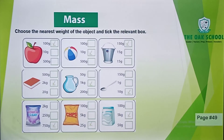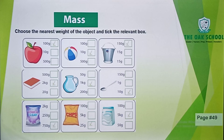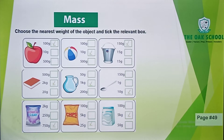Students, we are going to start the third chapter. This is your workbook page number 49. I have already explained the topic about maths. Today we are going to start the third chapter. The first question is to choose the nearest weight of the object and tick the relevant box.